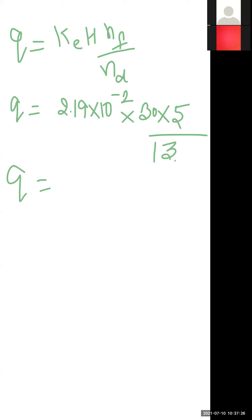So while solving these values, this is approximately 2.57 times 10 to the power minus 4 meter cube per second. This is the discharge of seepage loss per unit length.